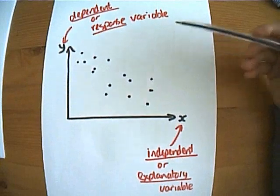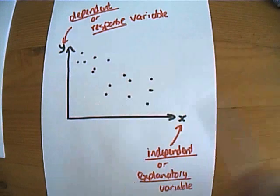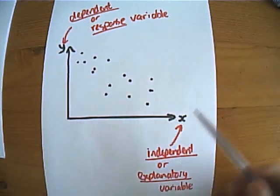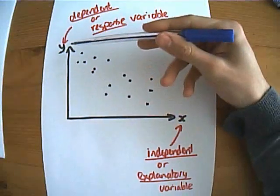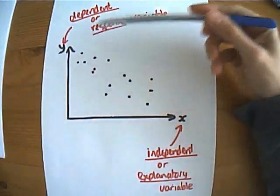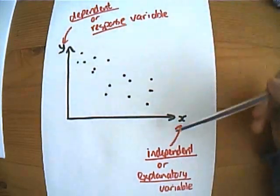Now before we get into this, a couple of things I need to point out and that is some terminology that is sometimes used in this area. The variable that we plot across the x axis we normally call the independent variable and the value going up the y axis we call the dependent variable because this data, hopefully, is dependent on this data.